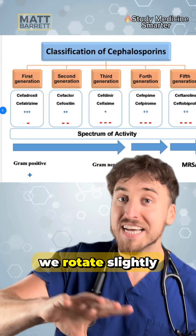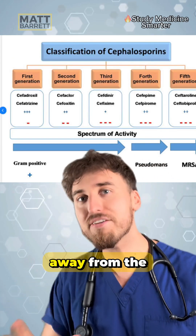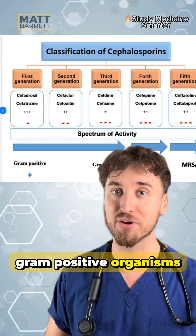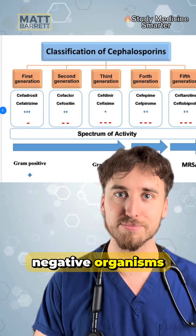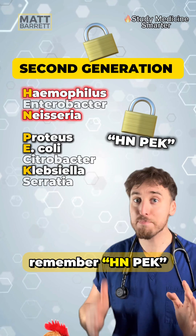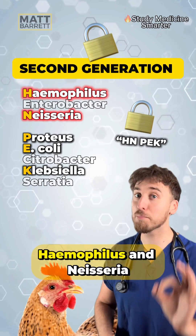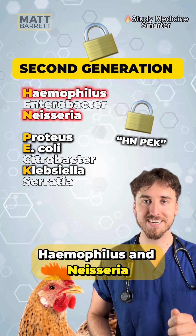For the second generation, we rotate slightly away from gram-positive organisms into gram-negative organisms. Remember HEN plus PEC — we add in Haemophilus and Neisseria.